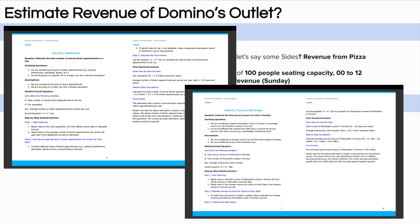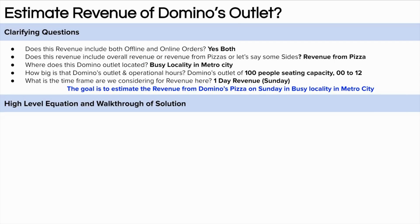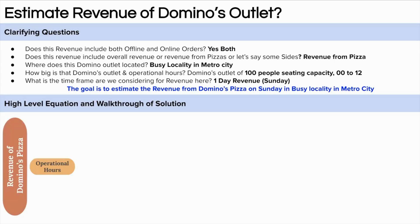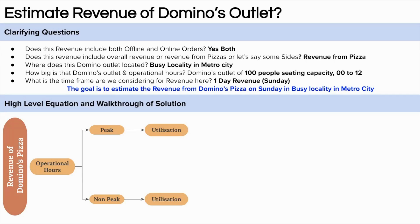If you want to learn more such concepts, download our guesstimate ebook covering questions from different industries like healthcare, FMCG, and travel. Download it from the pinned comment or description box below. Now for the high-level approach: since the outlet has 12 hours of operation, we will divide into peak hours and non-peak hours. In peak time, utilization of all ovens would be around 100%, but in non-peak hours, utilization would be less. Demand can be seemingly infinite since the outlet is in a busy metro area, so we won't be able to fulfill all demand. From this utilization concept, we calculate pizzas sold in peak and non-peak hours.